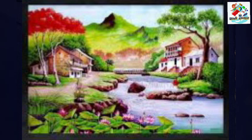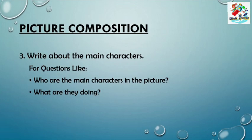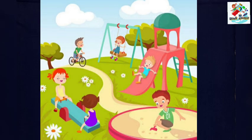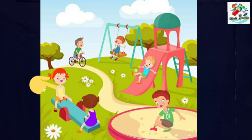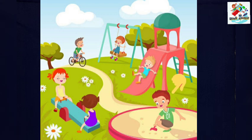Our next point is: write about the main characters. Main characters means who is the main character in the picture and what they are doing. For example, look at these pictures — this is the picture of a garden. A boy is enjoying a ride on his bicycle, two girls are having fun on the seesaw, a boy is taking a slide, a girl is playing on a swing, one more boy is playing in the sand.